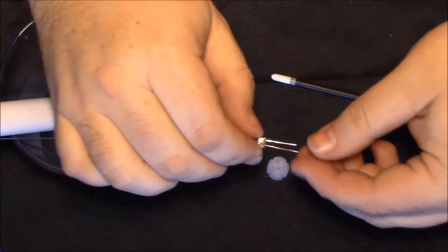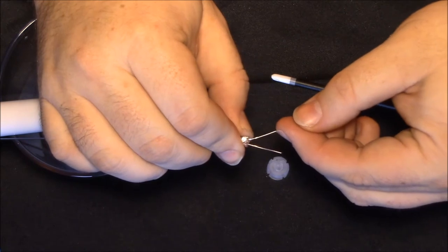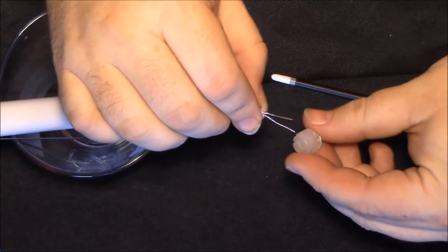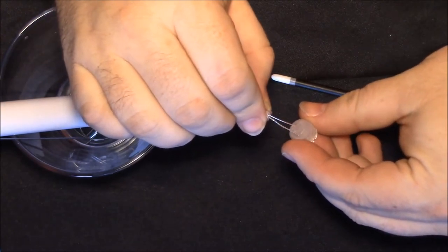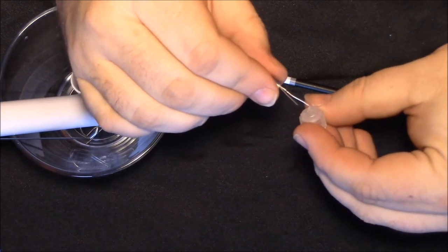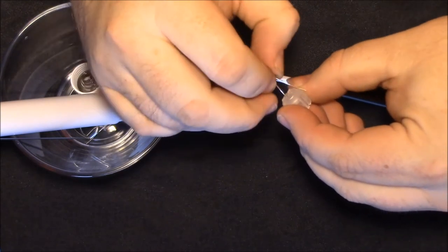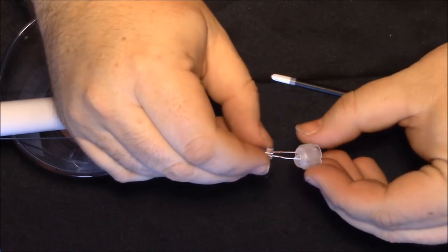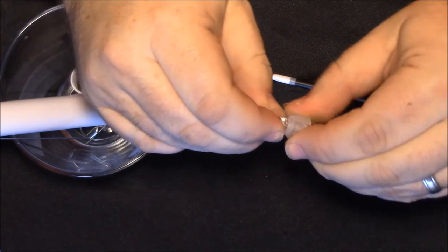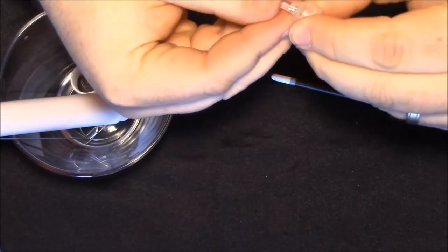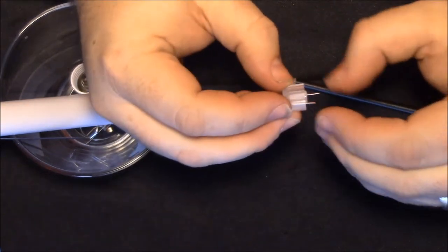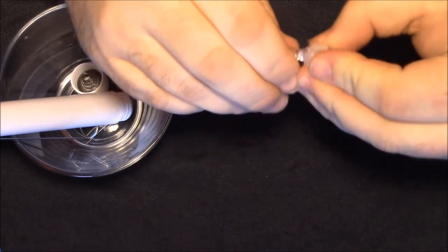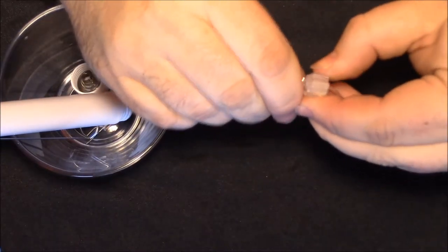If you still can't figure out what side is negative and positive, the last way is to take one of the button batteries and put that battery in between these two leads. Push them together. If it comes on, then whatever positive side of the battery is touching the lead, that's the positive side of the LED. Same thing with the negative.